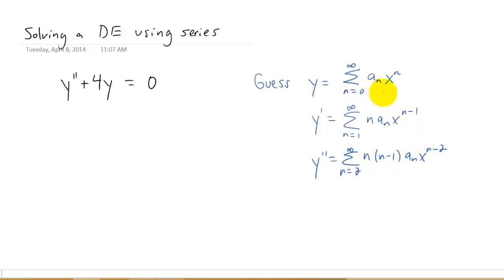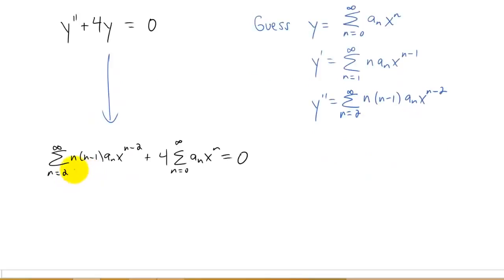We take the guess for the solution of the differential equation, we take our derivatives, we plug all of that into the differential equation. And our differential equation ends up looking something like this. That's pretty ugly, so we want to simplify it by combining these two series into one. We need to make the powers on x the same in each one of these series.